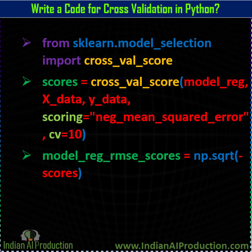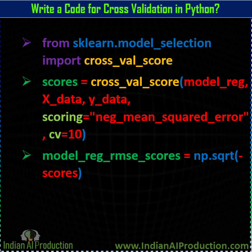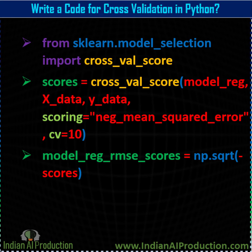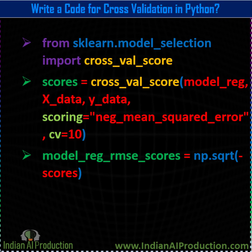After that, you specify how many subsets to create for your dataset and how many models you want to train. Here we are using a cross-validation value of 10, meaning we are creating 10 subsets of our dataset and training 10 machine learning models on those 10 subsets.